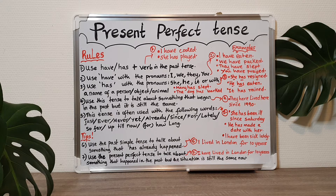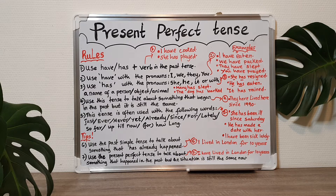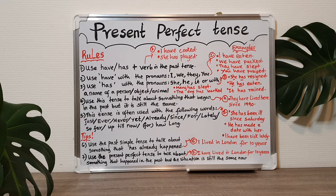The second rule is: when do you use 'have' and when do you use 'has'? You use 'have' with the pronouns I, we, they, and you — I have, we have, they have, you have. Look at examples two on the right: I have eaten, we have packed, they have slept, you have prayed. So if you want to use 'have', you must combine it with either I, we, they, or you.